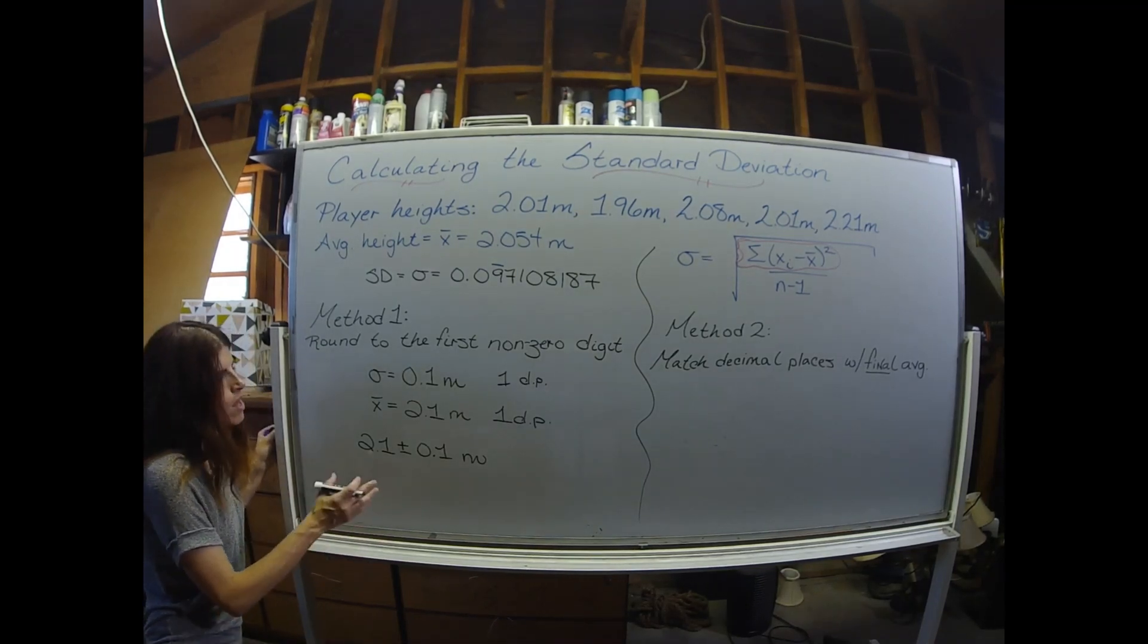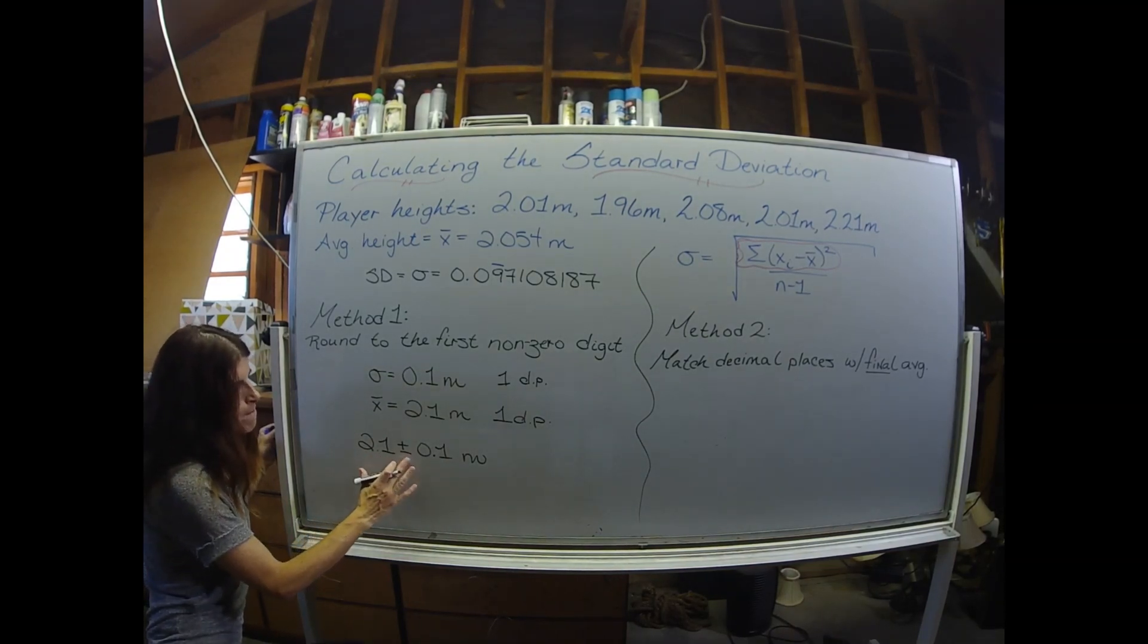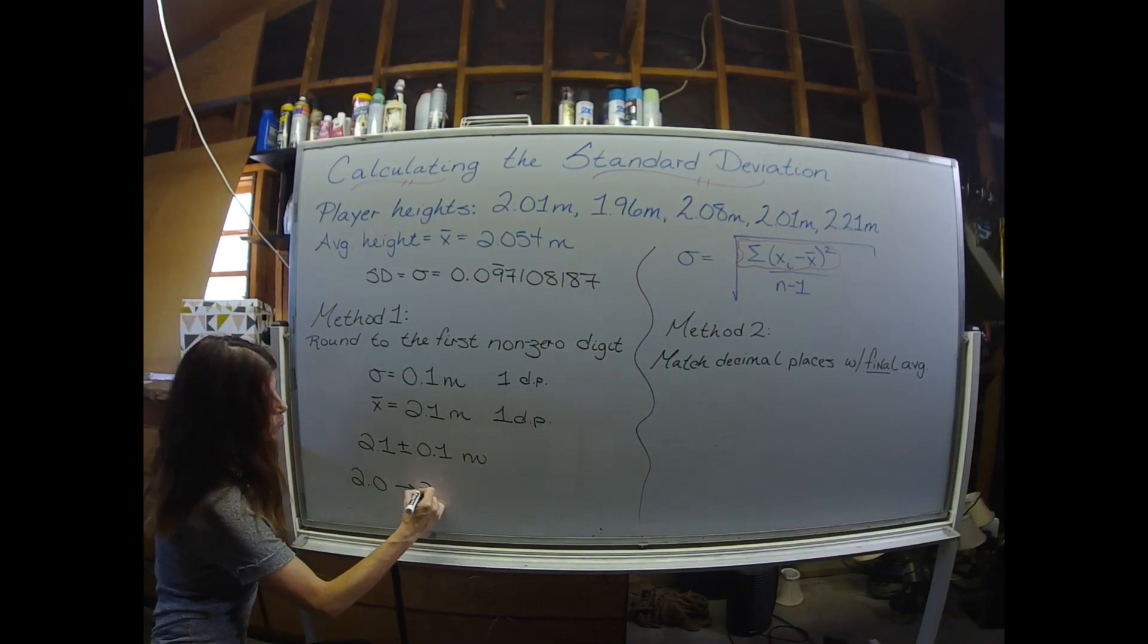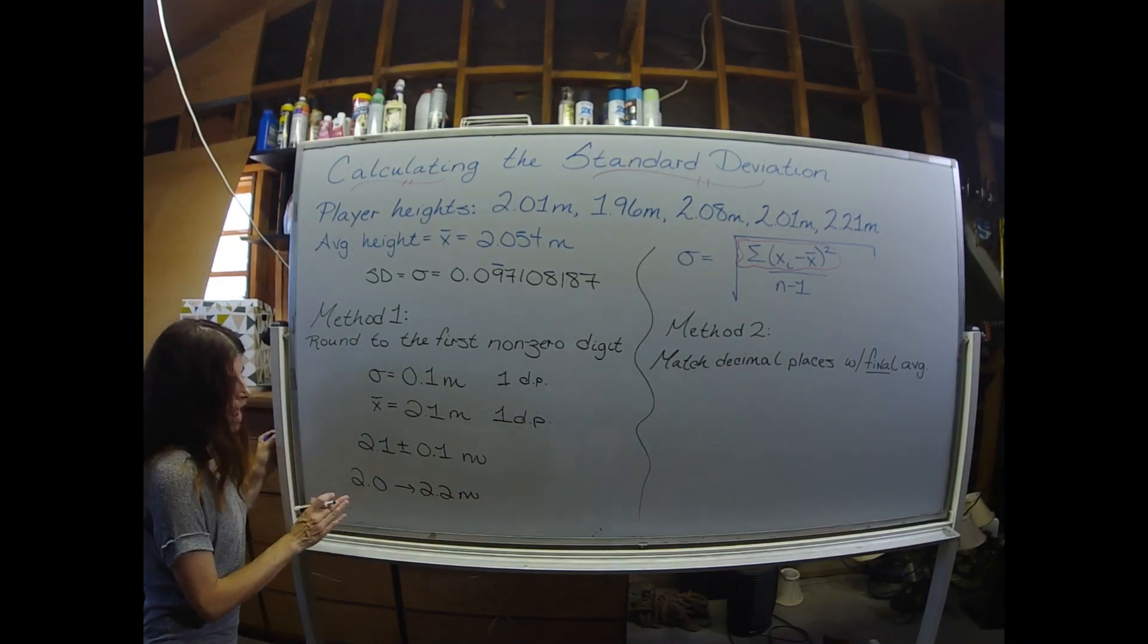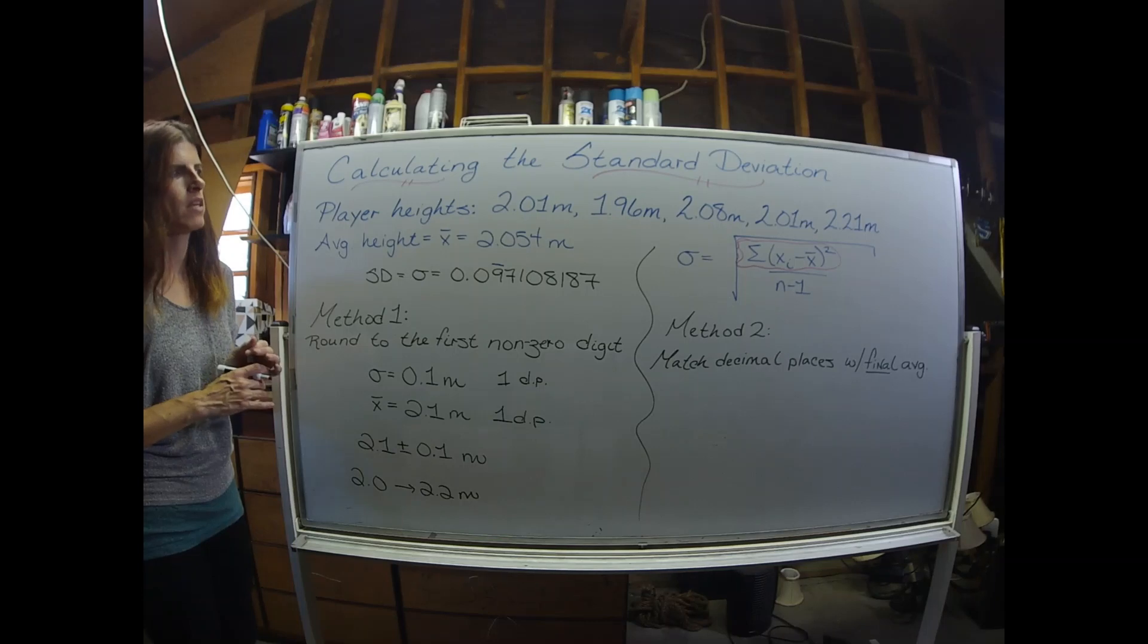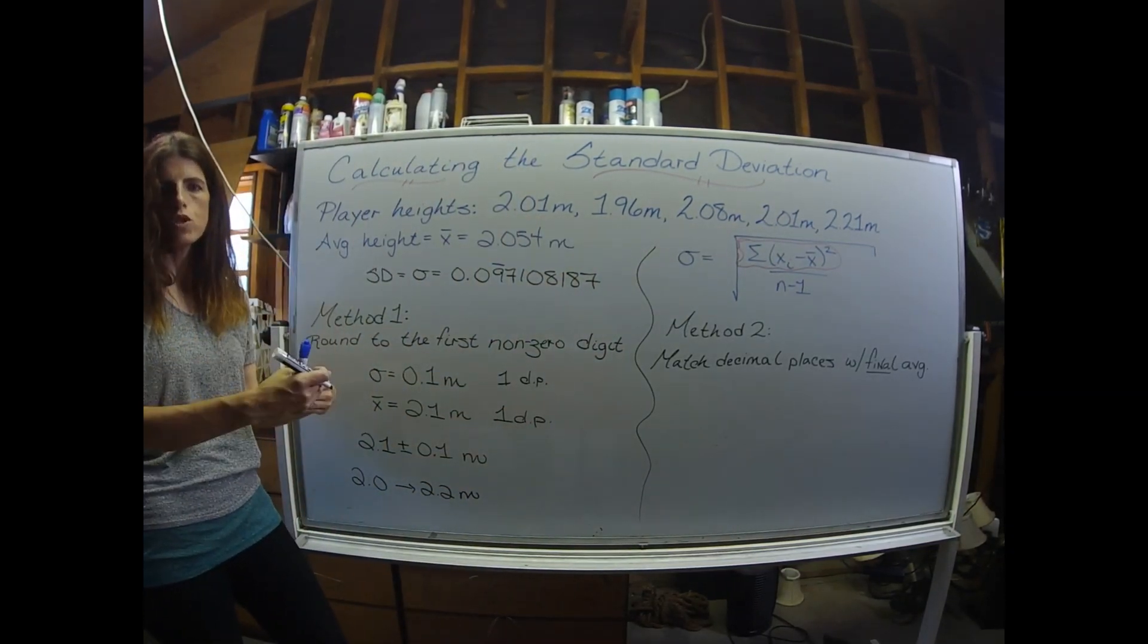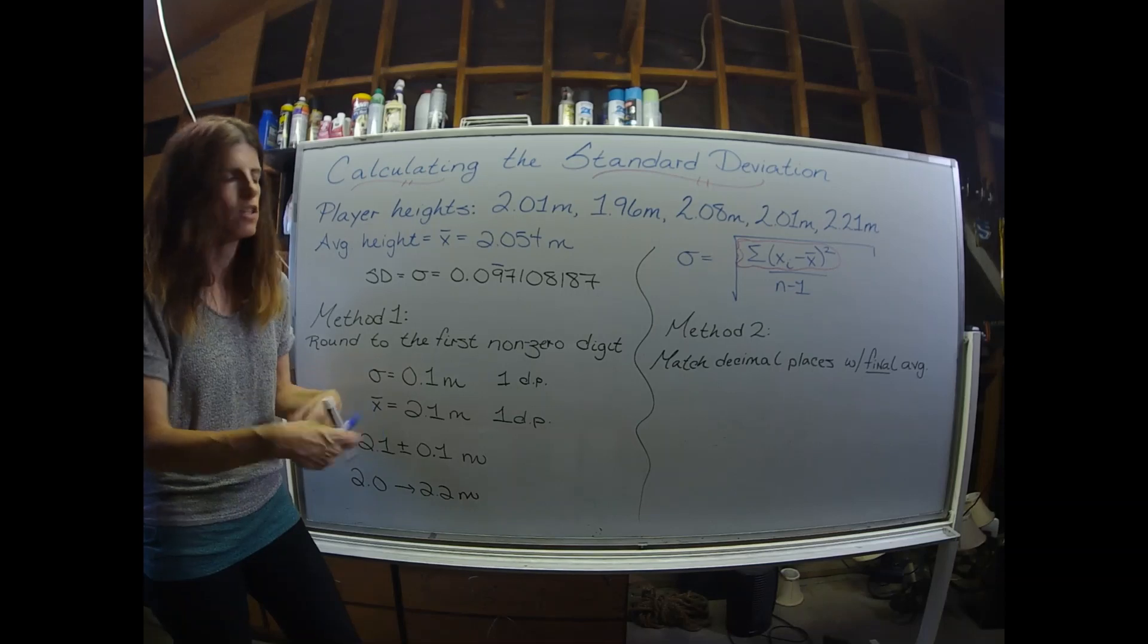As I mentioned earlier in the video, the standard deviation gives us a range. So let's calculate that range. We'll do 2.1 minus .1, so we're looking at 2.0. And 2.1 plus .1, which gives us 2.2. So most of the players have heights between 2 meters and 2.2 meters. And we could definitely see that there's some truth to that statement. There's a guard that's a little bit under 2 meters, and a center that's slightly above the 2.2. But for the most part, most of the values are in that range. And that's what the standard deviation tells us.